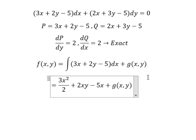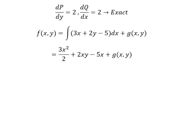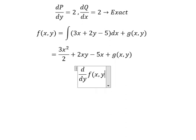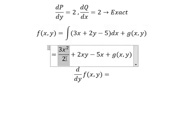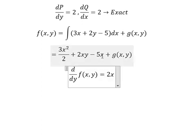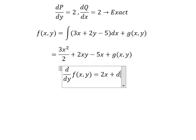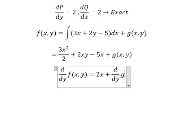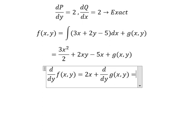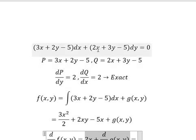We need to find the derivative of f with respect to y. The first term has no y, so we get zero. The next term gives number one. The last term has no y, so we get zero. We know that this derivative equals Q, so we set them equal.